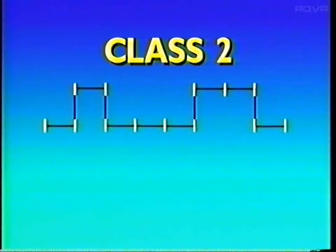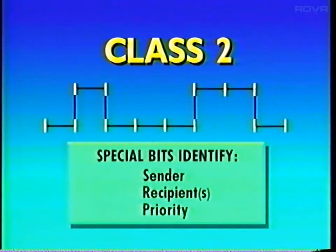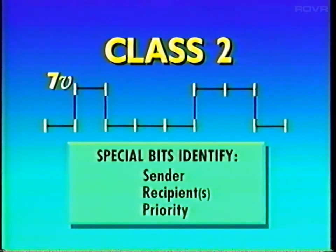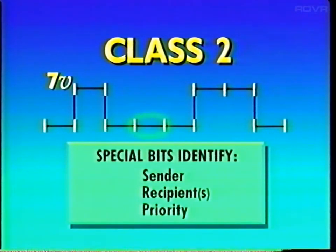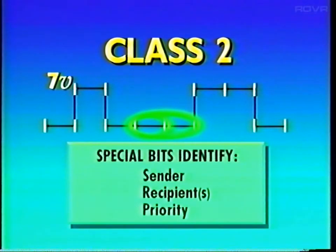The most important thing about diagnosing the Class II bus will be understanding what to expect when you check its voltage. Unlike the other two buses, which rest at their high voltages, the Class II rests at zero volts. Like an E&C bus, the Class II has no master. When several messages are involved, each one includes bits that identify the sending and receiving modules and the priority of the message. One difference with the Class II bus is that high voltage is seven volts, not five. Another difference is that bits don't all extend for the same length of time, but for either of two possible lengths, so different bytes could be of different duration.